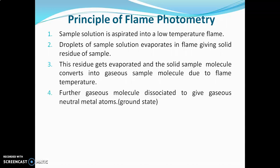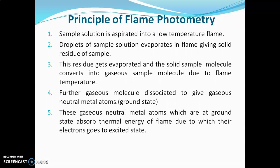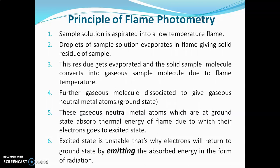These gaseous molecules dissociate to give gaseous neutral metal atoms, which are at the ground state. These ground-state gaseous neutral metal atoms absorb thermal energy of the flame, causing their electrons to go to the excited state. Since the excited state is unstable, the electrons return to the ground state by emitting the absorbed energy in the form of radiation. These emitted radiations are the basis of flame photometry and are measured by a detector.